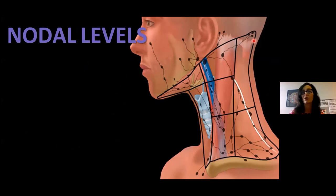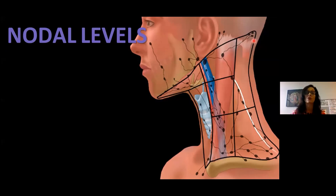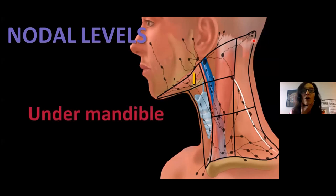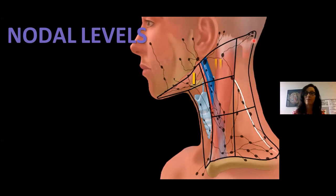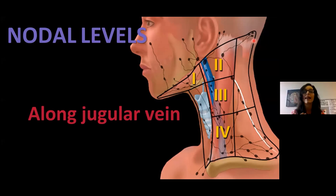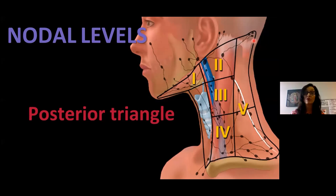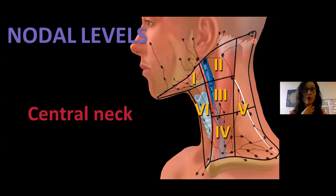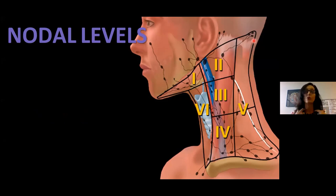I want to go through a simple system for learning this. Level one are all those lymph nodes underneath the mandible. Levels two, three, and four are all those nodes down the lateral neck along the jugular vein. Level five is the posterior triangle — behind the sternocleidomastoid muscle. And level six is the central neck: all the lymph nodes below the hyoid bone that are around the trachea and the larynx. So: one under the mandible, two/three/four along the jugular vein, five down the back, six centrally below the hyoid.